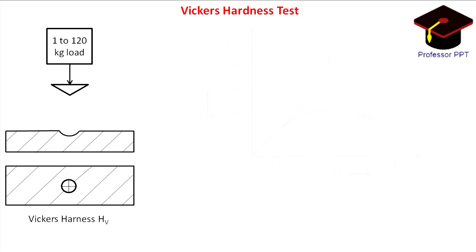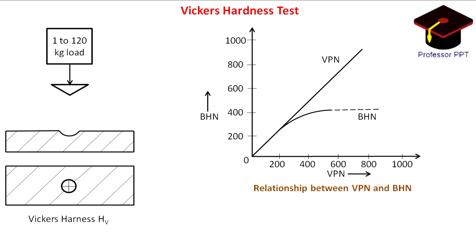VPN and BHN are almost identical up to 300 numbers; beyond this the two curves slowly diverge, and the divergence is significant beyond 600. This is because there is deformation in the ball indenter at high hardness values, and due to this the Brinell test is not recommended for testing materials of hardness above 400.